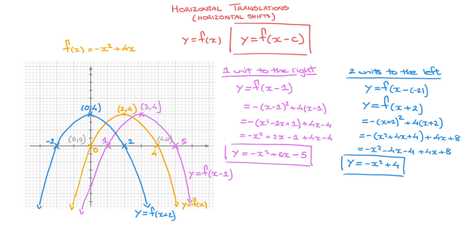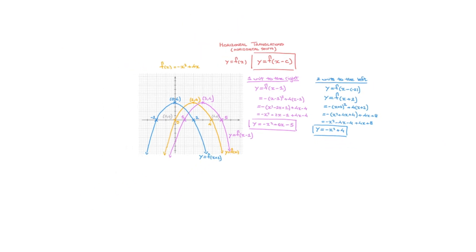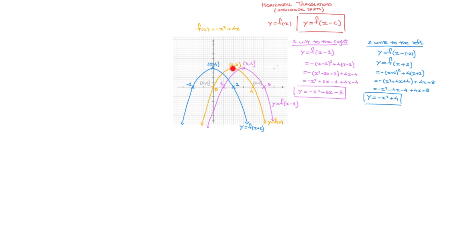We now know how to translate a curve both to the right and to the left. Let me explain why we subtract the amount we wish to move the curve by. I'll focus on the vertex of the original curve, which had coordinates (2, 4). The fact that y equals f of x passes through this point tells us that the output 4 is obtained from the input 2 — in other words, when we calculate f of 2, we get 4.